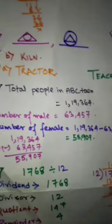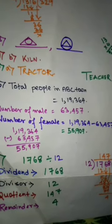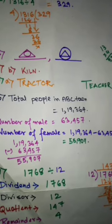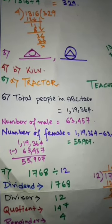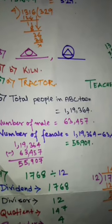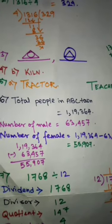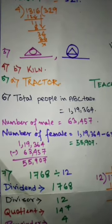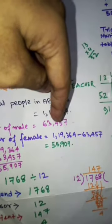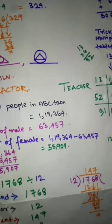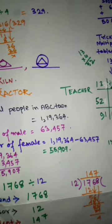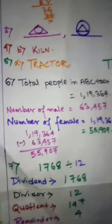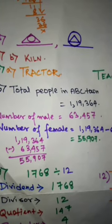Coming to the next question, the total population of a town is 1,19,368 and number of male members are given as 63,457. To find the number of female population you need to subtract from 1,19,368 the number of male members that is 63,457, which equals 55,907. The calculation is given over here, you can check it out very clearly and easily.